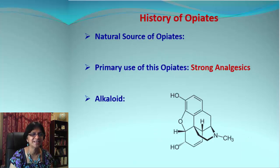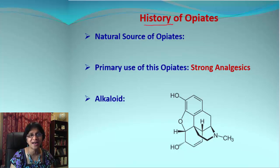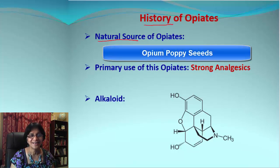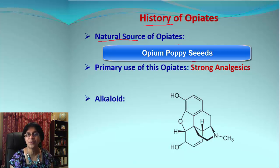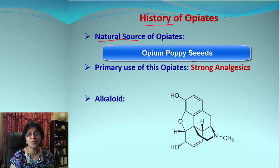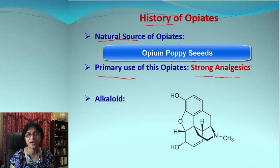How did we get that name opiates? The history of opiates goes back to the natural source — and it was opium poppy seeds.